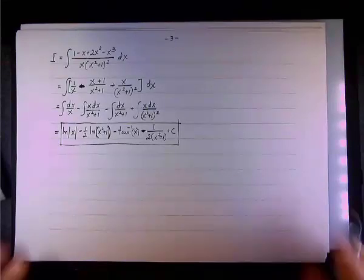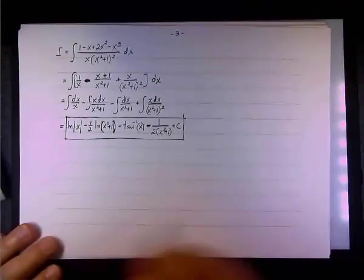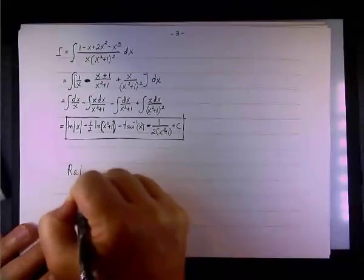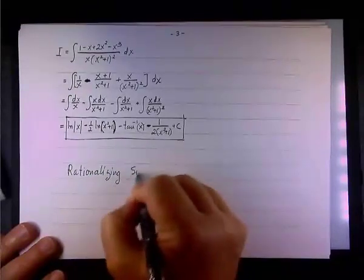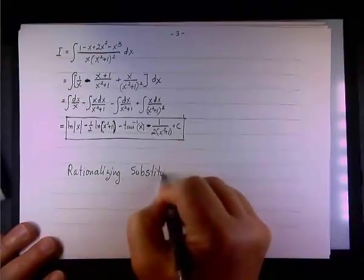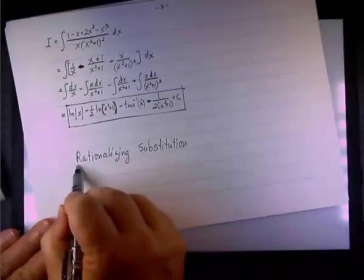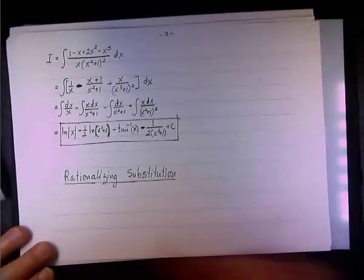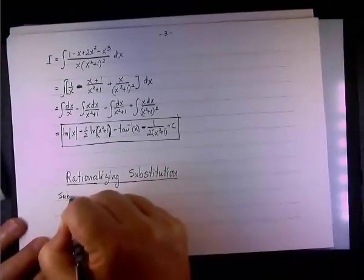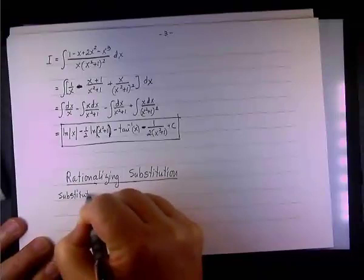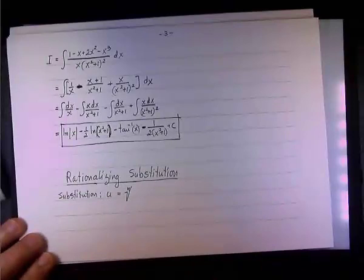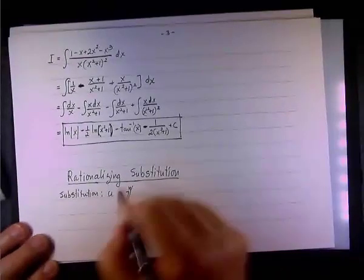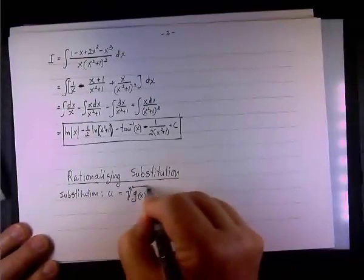So, this additional technique is called rationalizing substitution. In essence, the substitution goes like this: we're going to let u equal the nth root, it's working not only for the square root, any root, of a function that we call g of x.